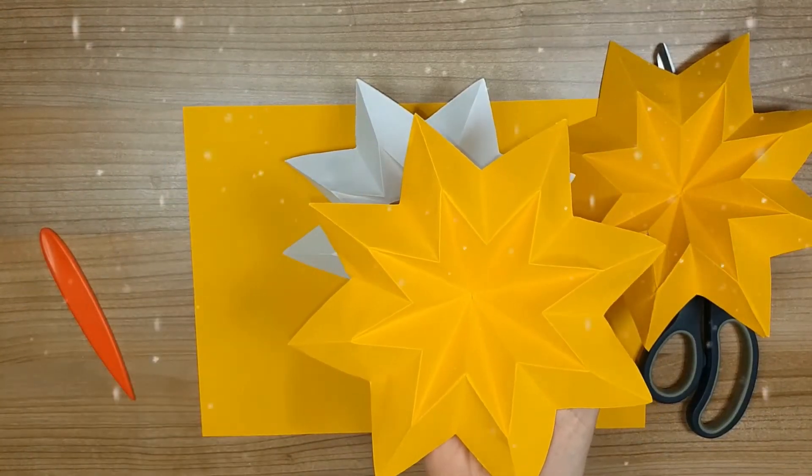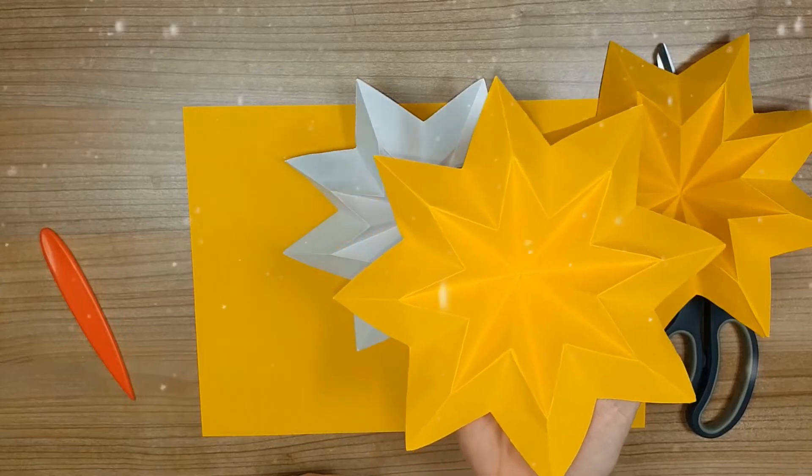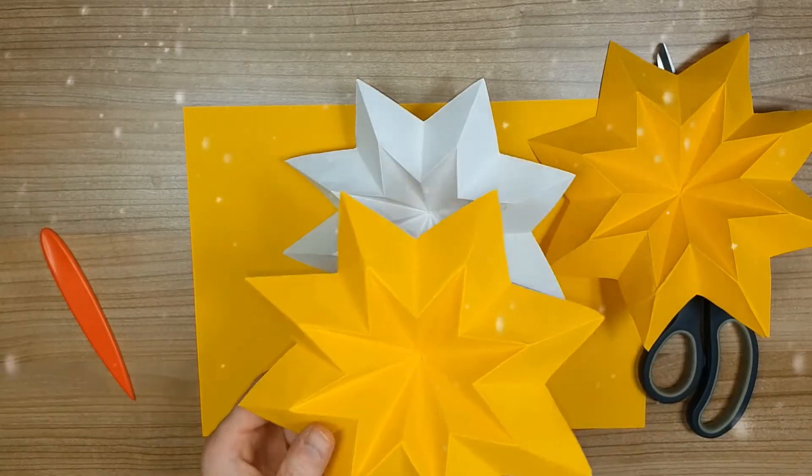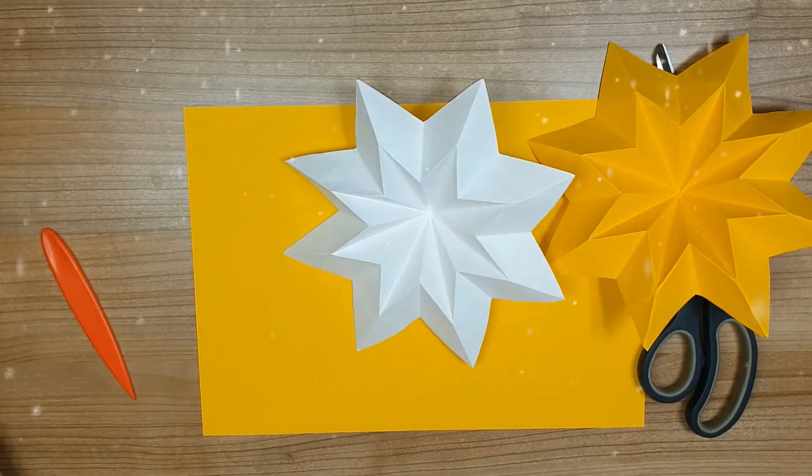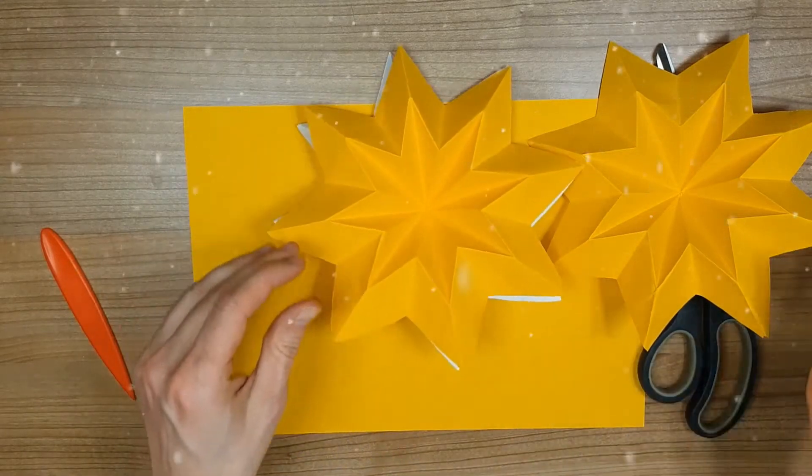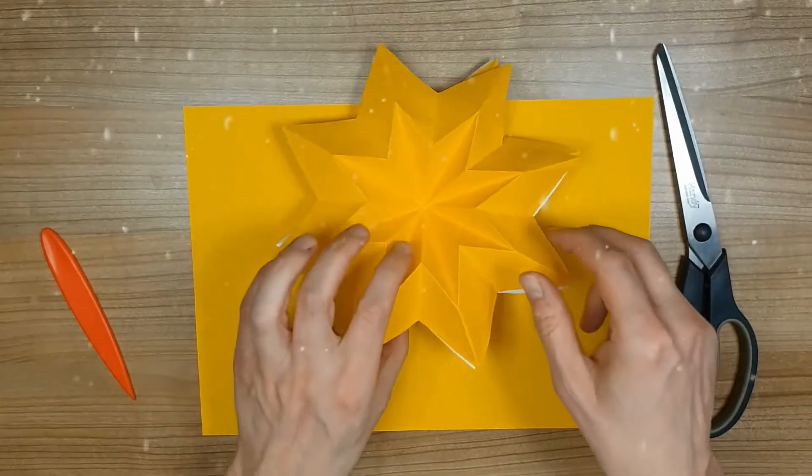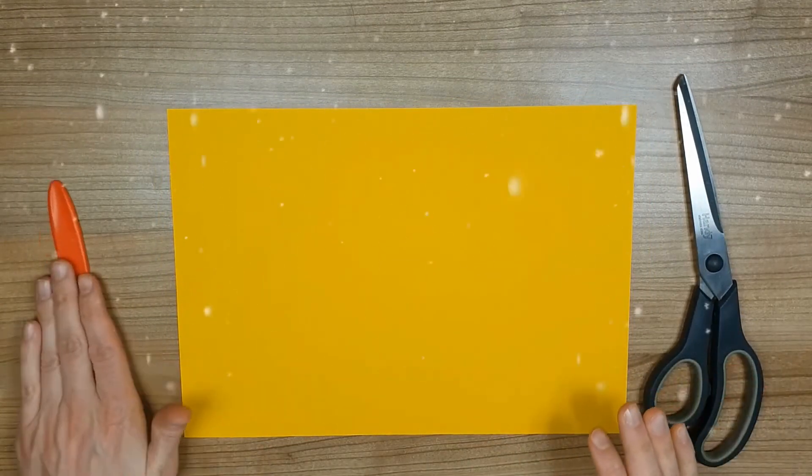Hi there! Close to Christmas it is fun to make decorations like this paper Christmas star. It's easy to make. A square paper and a scissor are needed. A pen or something with the same shape can help with the folding as well.